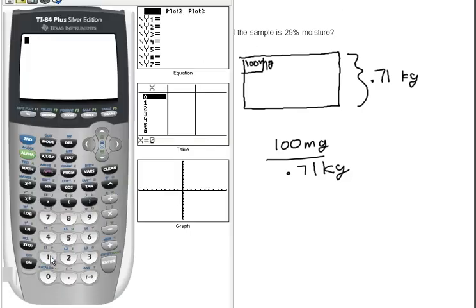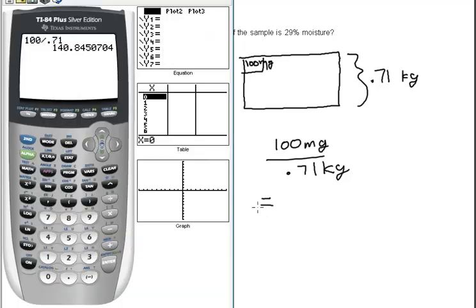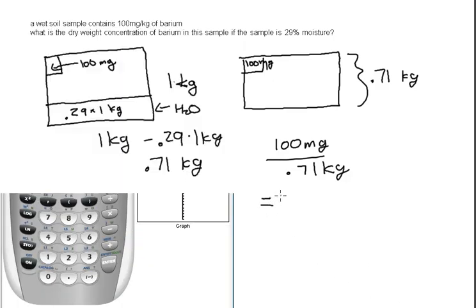So 100 milligrams divided by 0.71 equals 140.8 milligrams per kilogram, or 140.8 parts per million of barium in the dry sample.